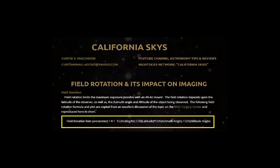What that means is: for a given latitude, the azimuth angle is best if it is 90 degrees, so the target is due east or due west — the cosine will be 1.